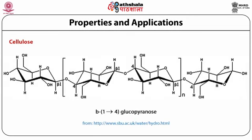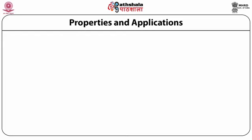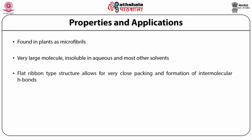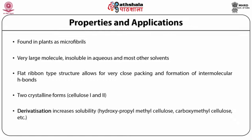Cellulose is another class of polysaccharide where the repeating unit is beta-1,4-glucopyranose, forming a polymer chain. Cellulose is found in plants as microfibrils and is a very large molecule, insoluble in aqueous and most other solvents. Its flat ribbon-type structure allows for very close packing and formation of intermolecular hydrogen bonds. Two crystalline forms exist: cellulose I and II. Derivatization increases solubility; examples include hydroxypropylmethylcellulose and carboxymethylcellulose.